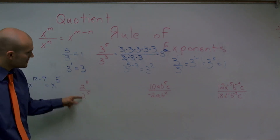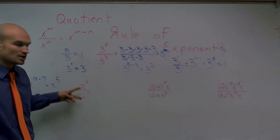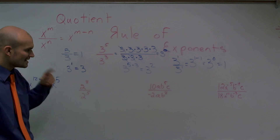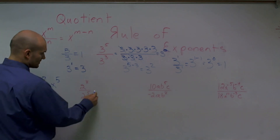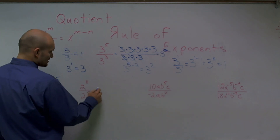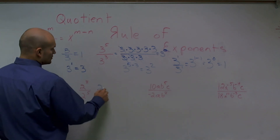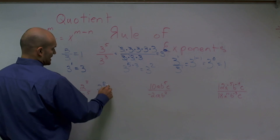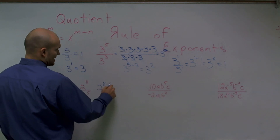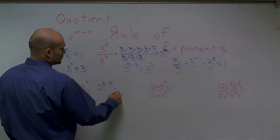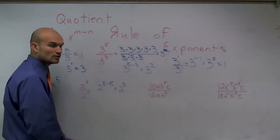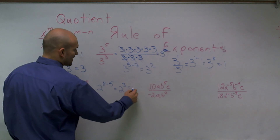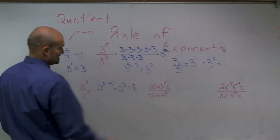And even if you have numbers, as long as your numbers are exactly the same, you can still work with it. So this is going to be 2 to the 8 minus 5, which equals 2 to the third power, which we can simplify as 8.